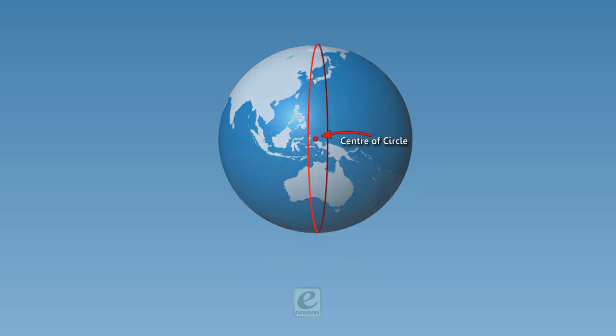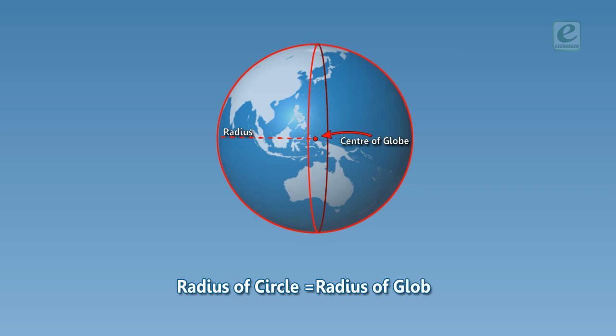The center of such a circle is the center of the globe and its radius is equal to the radius of the globe.